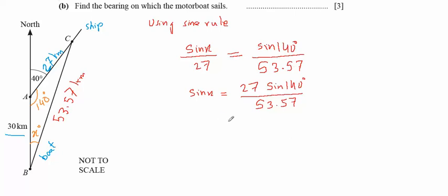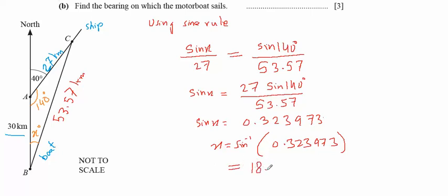Okay, so now using calculator this value will be this. So it means sine x is this, so therefore x is equal to sine inverse of this value, and then we will get that this is equal to 18.9 to one decimal place.